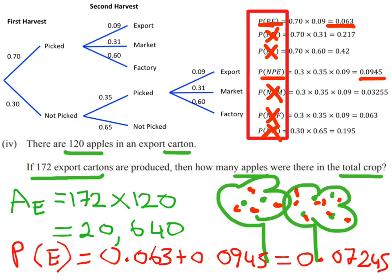I have the probability of an apple being an export apple. I have the total number of apples being sent for export. Now I need to work backwards to figure out how many apples were there originally. Just going over to a new slide here.